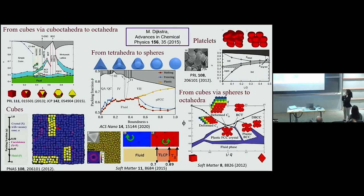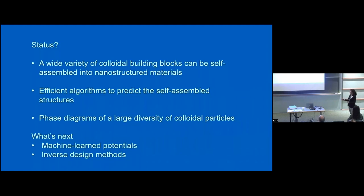These are the cubes going to cuboctahedra to octahedra; we also looked at the phase diagram of cubes, where there are many delocalized vacancies, triangles, going from tetrahedra to rounded tetrahedra to spheres, also cubes that can be made rounder via spheres to octahedra, with also platelets as a function of plate thickness. This is the current status: there is a huge variety of colloidal building blocks available, they can be self-assembled into nanostructured materials, and we have very efficient algorithms to predict the self-assembled structures and densest packings.